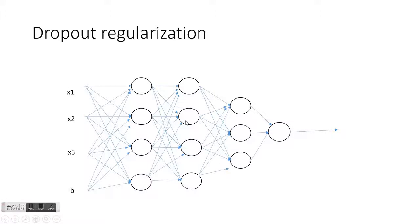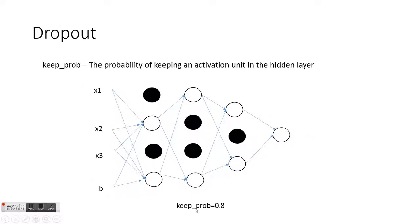Another technique is dropout regularization. Assuming you have a deep learning network with multiple hidden layers, dropout was employed by Alex Krizhevsky and others when working on image recognition. There is a parameter called keep_prob, which can be any value between 0 and 1. For every layer, we generate a set of random numbers between 0 and 1, equal to the number of units in that hidden layer, and for all values greater than keep_prob we retain the activation unit.